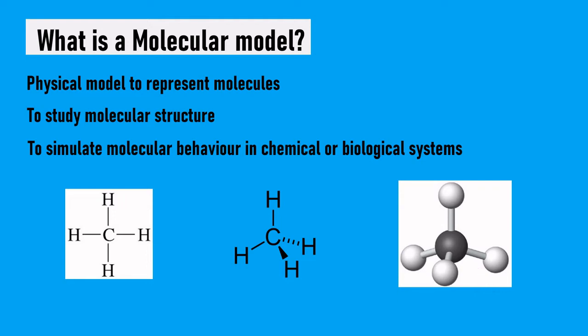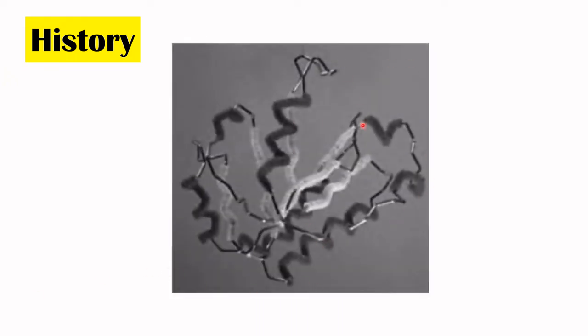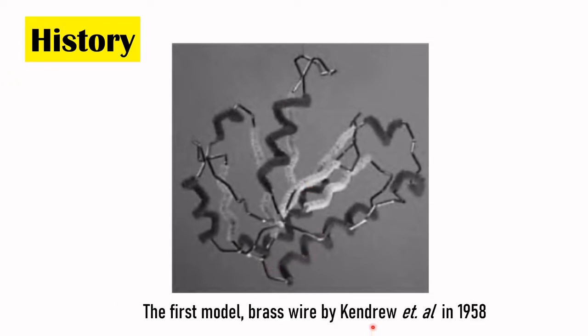Now coming to the history of the molecules. How did this all representation of molecules start? This image of a protein molecule was developed by a team, Kendrew et al, in 1958. This is the first physical model of a macromolecule, and this is the structure of myoglobin which was determined using X-ray crystallography.